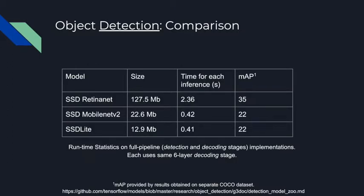For implementation comparisons, this first table shows the full pipeline for each of the three systems — including detection and decode stages — where each version has a different detection stage: RetinaNet, MobileNet V2, and SSD Light. The network we optimally chose was the SSD Light implementation because of its small size and decreased inference time per image. With the full SSD Light pipeline, we can detect the license plate in a given image and decode it as a text string in under 0.41 seconds.